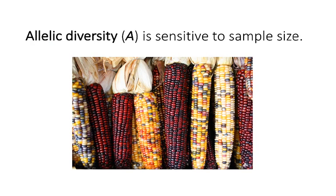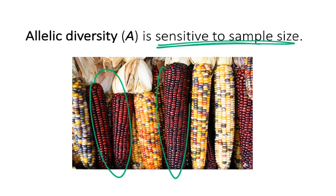Importantly, allelic diversity is really sensitive to sample size. If we think about this example with the corn, the number of alleles that we recognize in the population can be dependent on which individuals we sample. If we're only sampling some of these individuals, we're not going to recognize all of the alleles that are present at that locus. So allelic diversity is heavily influenced by how big your sample size is.